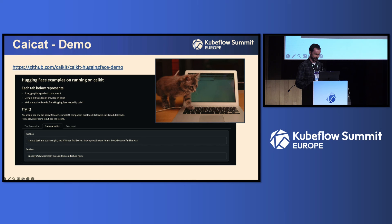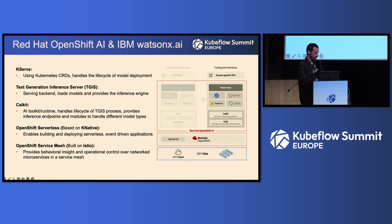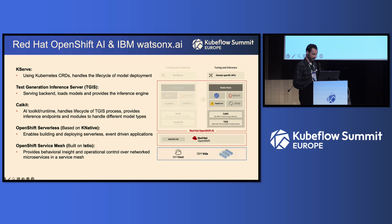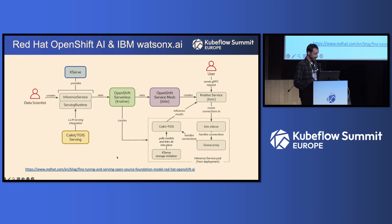So how do we put this all together? With Red Hat OpenShift AI — which is used by IBM Watson X AI — all of these technologies are playing their part. We're using KServe to handle the actual model deployment, TGIS as our serving backend and inference engine, and KKIT as the toolkit that handles the lifecycle of the TGIS process and gives us the inference endpoints. It's all built on top of Kubernetes and Red Hat OpenShift, so we get all the scalability and performance that come with KNative, Istio, and the other bundled technologies. There's a great blog post from Red Hat linked here that explains how all of these technologies work together to create a seamless user experience.